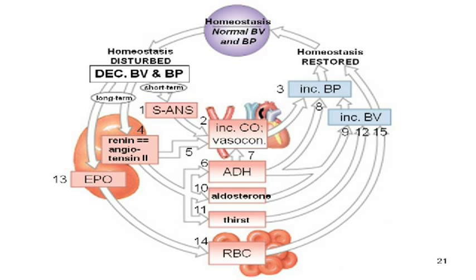Long term, the kidneys release renin, activating angiotensin II. Angiotensin II tells the posterior pituitary to release ADH — kidneys save water, increasing blood volume and pressure. It tells the adrenal cortex to release aldosterone — kidneys save sodium, which helps save water. It makes you thirsty so you drink water, increasing blood volume. And it causes vasoconstriction. The kidneys also release erythropoietin, making more red cells, thickening the blood, and raising pressure. Your body has a tremendous number of ways to keep blood pressure up, because if blood pressure drops, kidneys shut down, tissues aren't perfused, and the brain shuts down.